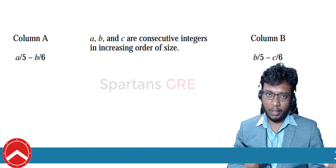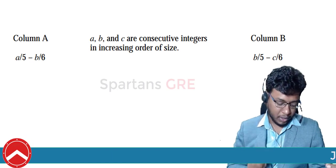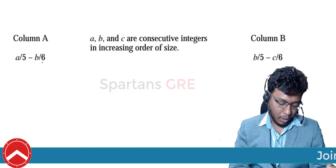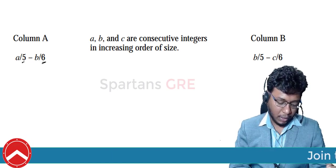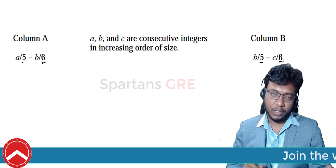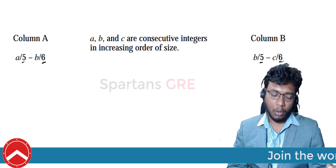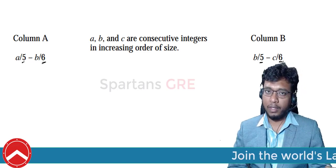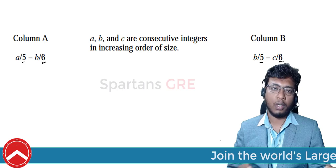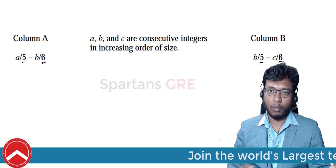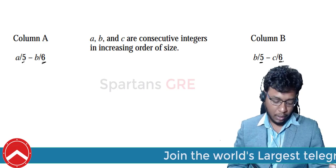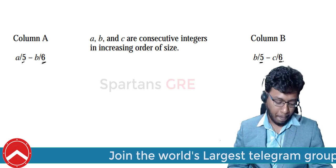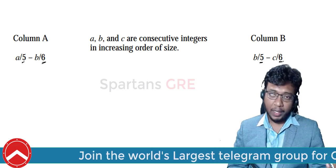By observation, here you have 5 and 6 in one quantity, and 5 and 6 in the other quantity as well. What I will do is try to eliminate 5 and 6 since they are common in both quantities.